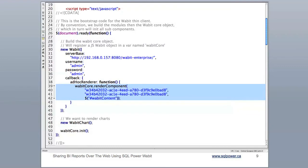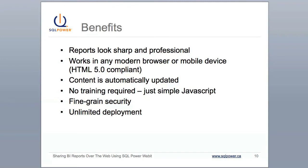Instructions and code examples are included when you download the SQL Power Wabit Enterprise Edition. Your web-deployed charts and reports will look sharp and professional in any modern browser or mobile device. The report content can be automatically updated by your Wabit server, so it's always up to date. No extra training is required to embed Wabit objects into your web pages — you just need some simple JavaScript, which your web team already knows how to use. The Wabit server offers fine-grained security for full control over the web accessibility of your content. And unlike some of its competitors, the SQL Power Wabit server offers unlimited deployment, so you can embed the components in as many websites as you need.